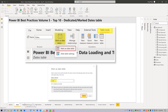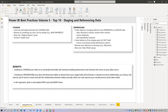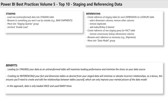After that, my remaining nine favorites in no particular order are: staging and referencing data for multiple reasons. Loading or staging your data as an untransformed table will maximize loading performance and minimize the stress on your data source. Creating or referencing your fact and dimension tables from your staged data will minimize or obviate missing relationships, and as a bonus, this ensures you'll need to create and edit the relationships yourself, which can only improve your mental picture of the data model.